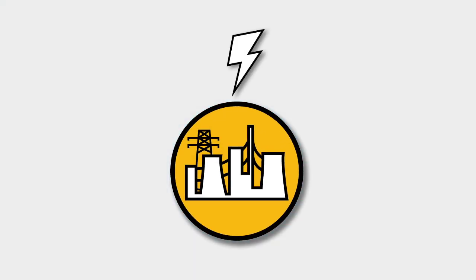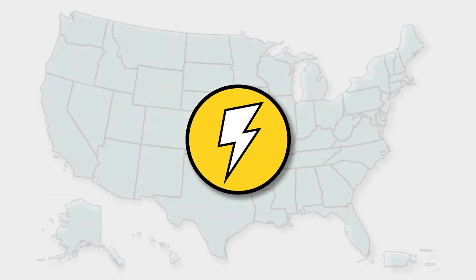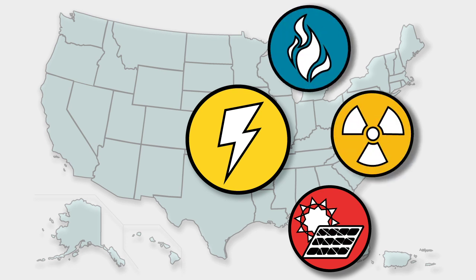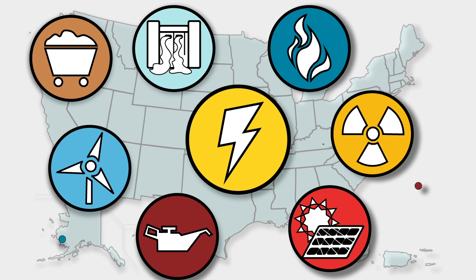Your utility may make electricity or buy it from someone else who does. Electricity in America is generated from sun, nuclear, natural gas, coal, oil, wind, water, and many other sources.